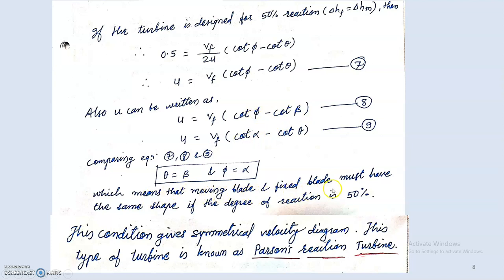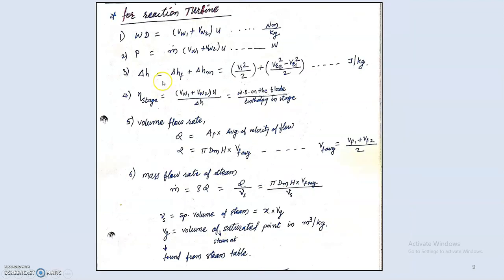The condition θ = β and φ = α means that the moving blades and fixed blades have the same shape when the degree of reaction is 50%. This gives a symmetrical velocity diagram, and this type of turbine is known as the Parsons reaction turbine — named after the scientist who developed it. Whenever a problem mentions a Parsons turbine, it is by default a 50% reaction turbine with θ = β and φ = α.